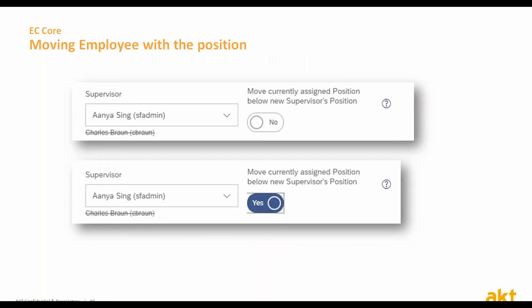Until this release, when a user wanted to change an employee's manager, a vacant position under the new manager position was required. But now, when changing an employee's manager, it is possible to also move the employee's position in a single action with a single workflow. Note that if the position is moved, no other changes are replicated from the job information to this position — so you cannot move the employee position and change its grade in one transaction. And if multiple incumbents are assigned to that position, all incumbents will get a new supervisor. Be careful when using this functionality, and avoid using it for mass position moves.